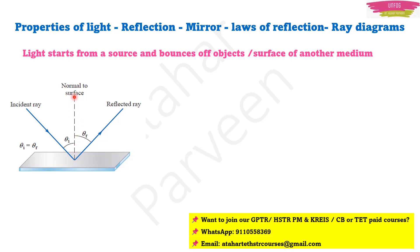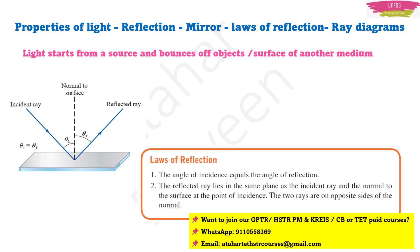The normal is an imaginary line, but it is very important because we measure the angle of the incident ray with respect to the normal — that angle is known as the angle of incidence — and the angle made by the reflected ray with respect to the normal to the surface is known as the angle of reflection. Whatever reflection happens, it is based on two laws, known as the laws of reflection.